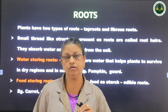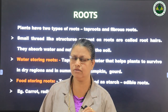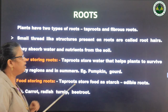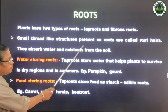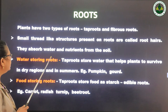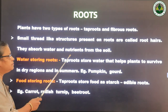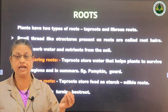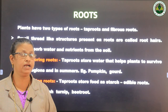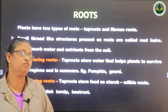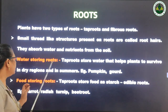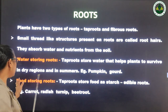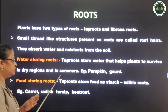Plants have two types of roots: taproots and fibrous roots. Small thread-like structures present on roots are called root hairs — they absorb water and nutrients from the soil. Water storing taproots store water that helps plants survive in dry regions and in summer. For example, pumpkin and gourd.